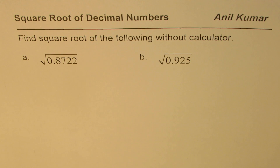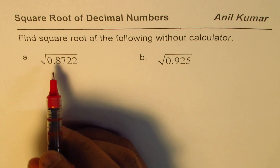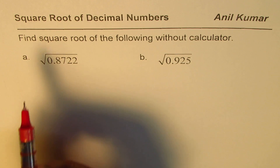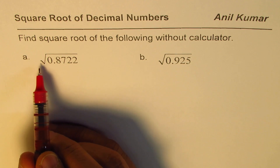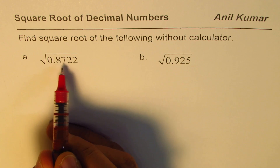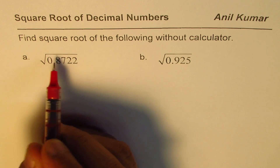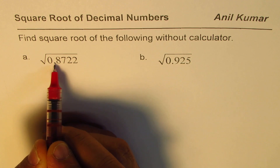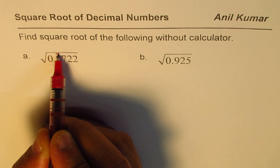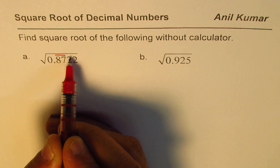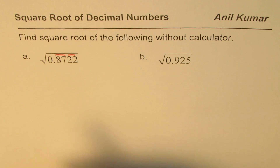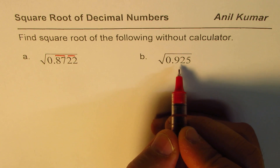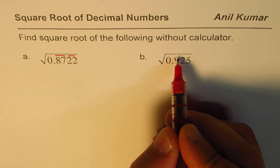The first step is that we have to group in sets of two, moving away from the decimal. To find the square root of 0.8722, away from the decimal, grouping in sets of two means: if the number is on the right side of the decimal, move right in sets of two. So that is the first set of two, and then we have the second set of two.